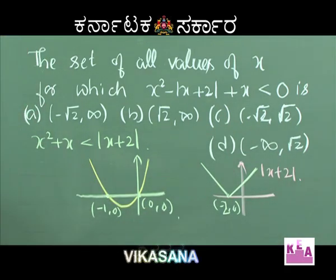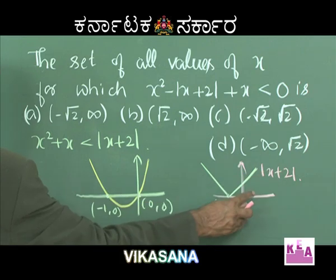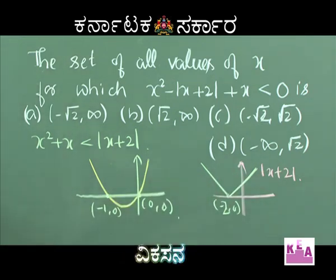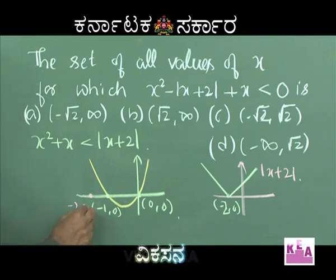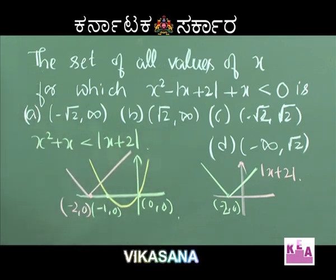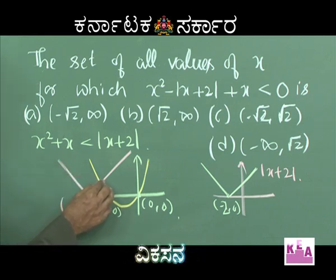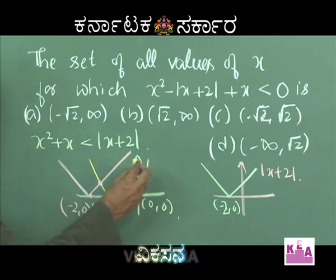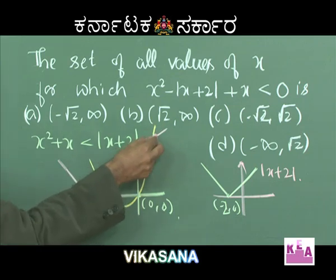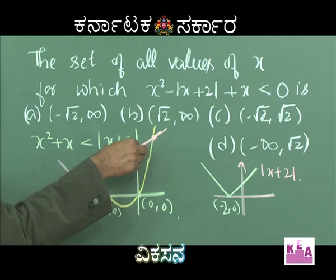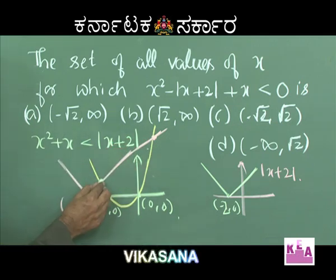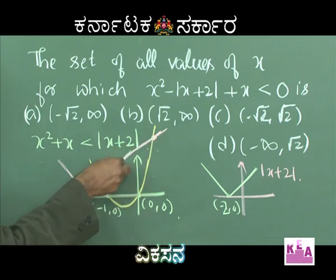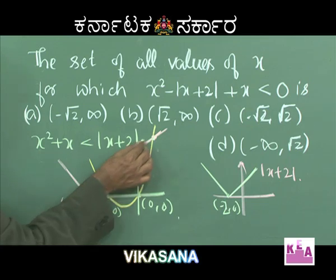This graph is mod of X + 2 with vertex at (−2, 0). For mod of X − 2, the vertex is at (2, 0). Drawing the graph, these two curves — the parabola and the modulus graph — meet at two particular points. The parabola X² + X is less than mod of X + 2 in the region below this line.